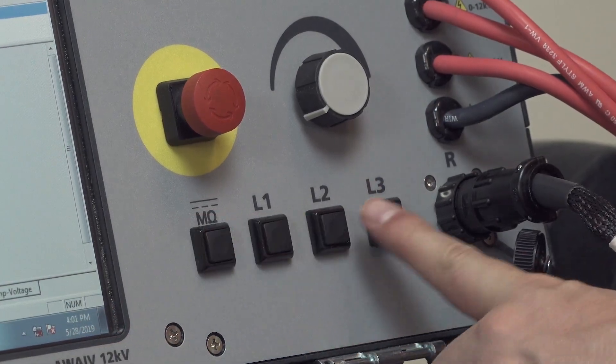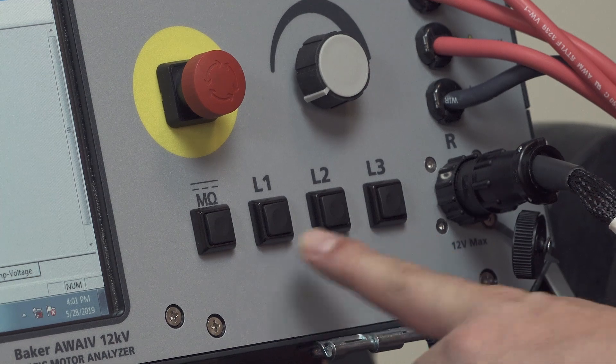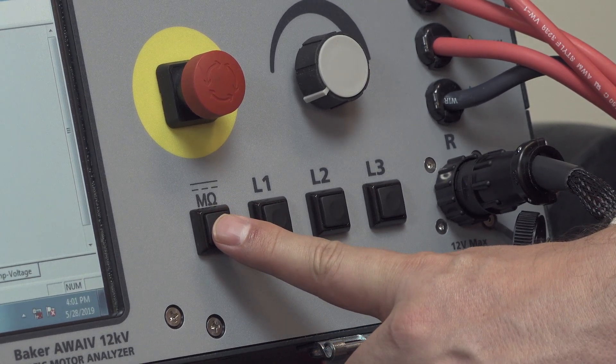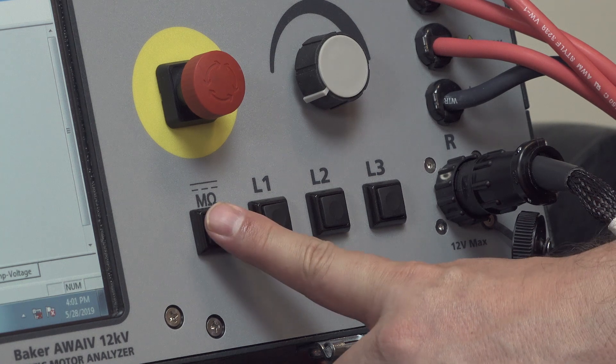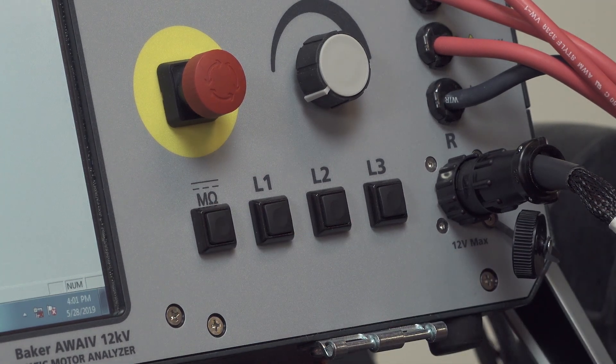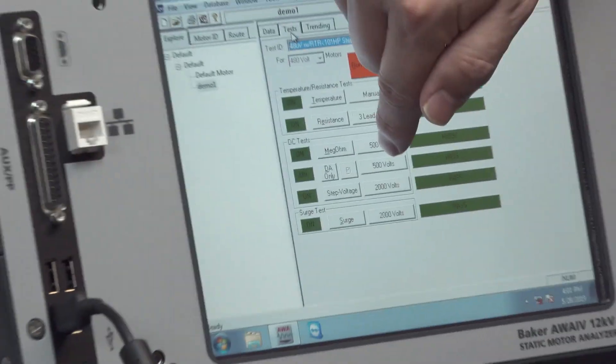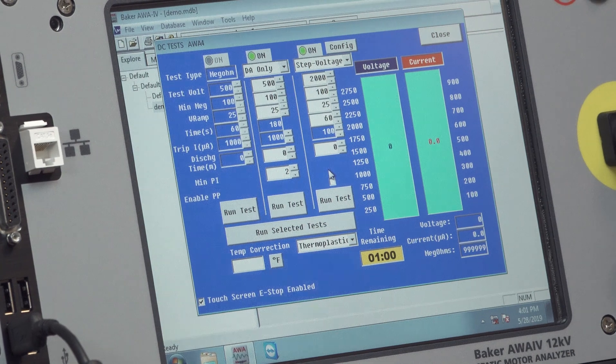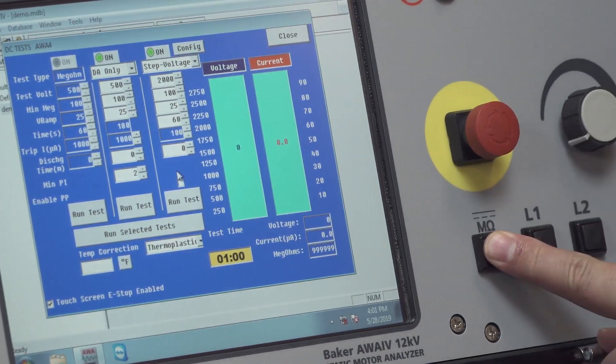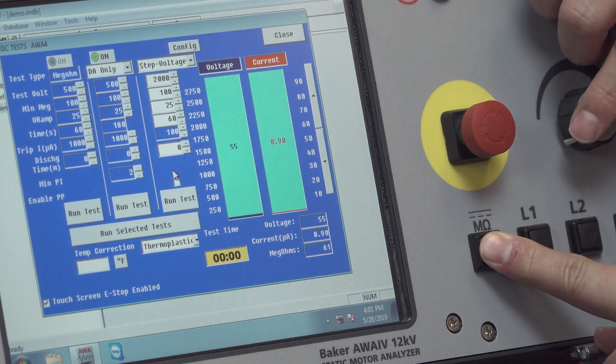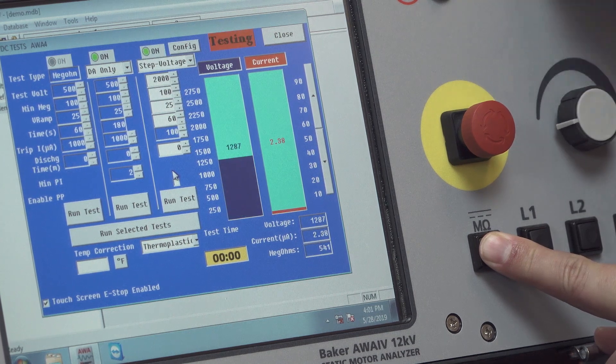Then we have the push to test buttons along the bottom here. One's labeled megaohm DC. This is for doing manual DC testing. You'd have to be on the proper test screen for DC testing. And then by depressing the megaohm DC button, you can perform a manual high pot test using the potentiometer to control voltage.